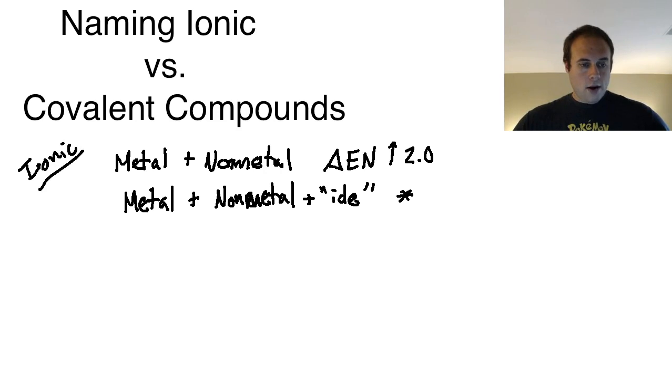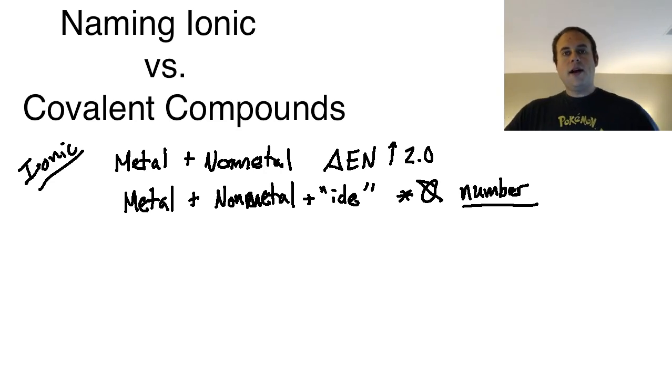It's very important to note here that when we're naming ionic compounds, there are going to be no numbers associated with the name, so none of the number prefixes. Think about the name carbon dioxide—dioxide meaning two oxygens. You do not find any of that naming portion with the prefixes when you do ionic compounds. They are absent from ionic compounds.